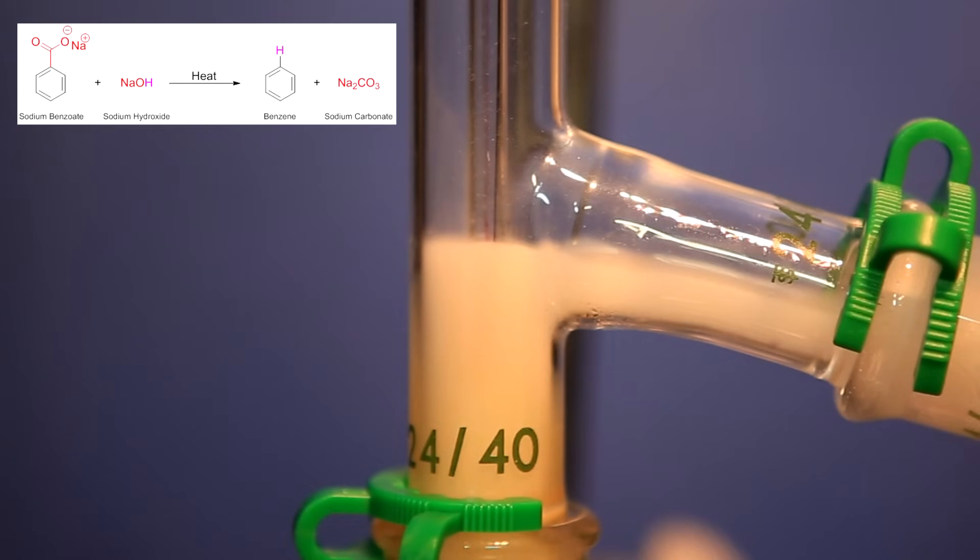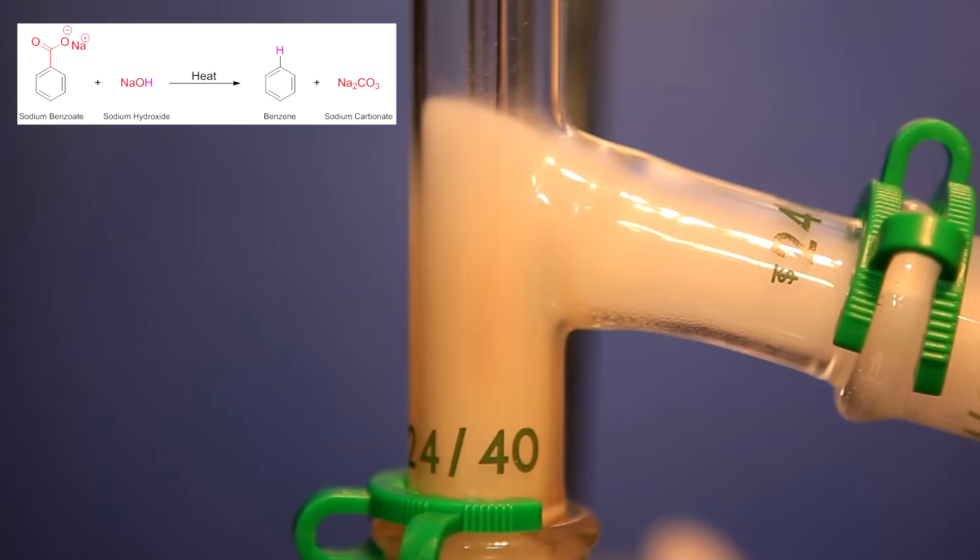In this reaction what's being carried out is known as a decarboxylation, and the overall reaction can be seen above. The reaction occurs between the sodium benzoate and the sodium hydroxide. With heat it produces benzene and sodium carbonate. The sodium carbonate is a salt and it stays in the can, and the benzene is boiled off. I've color coded some of the atoms so you can see where they end up in the final product.